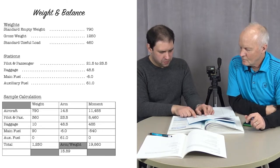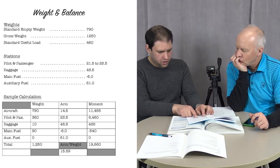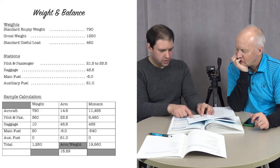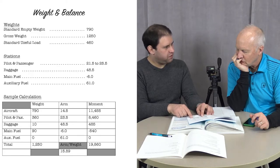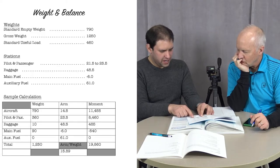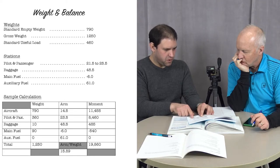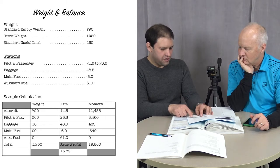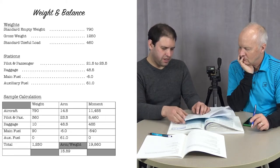What we're going to do is we're going to add up all of the weights and all of the moments. If you divide the total moments by total weight, you get the arm. So that's how we figure out where the center of gravity is.